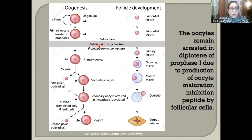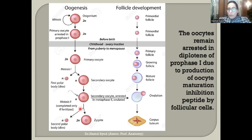During childhood, the process remains arrested as the ovary is inactive. At puberty, FSH and LH from the pituitary activate the ovaries. Primary oocytes arrested in prophase I then complete their cell division, forming a secondary oocyte in the follicle ready for ovulation. Meiosis II completes only if sperm is present, at which point fertilization occurs and the zygote forms.